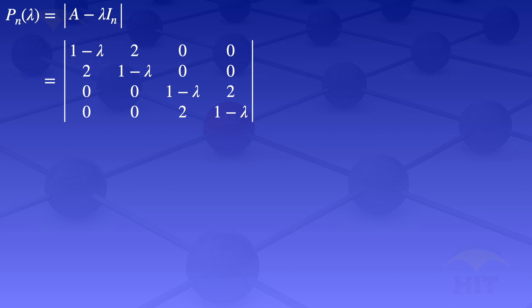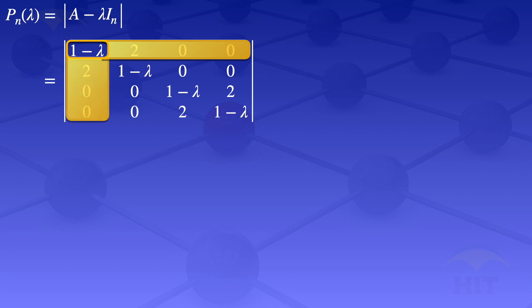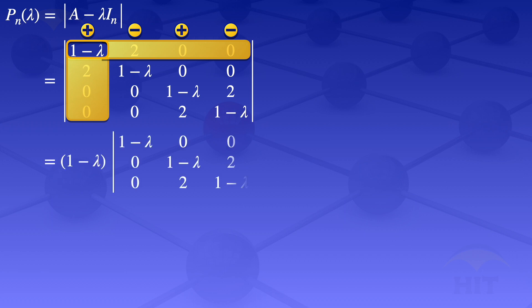Using row number 1 to evaluate the determinant, I'll look at the first element, 1 minus lambda. I close the row and the column containing this element. Using the array of positive, negative, positive, negative signs — the 1 minus lambda is sitting on a positive position. So it will be 1 minus lambda multiplied by the determinant of the uncovered elements: 1 minus lambda, 0, 0; 0, 1 minus lambda, 2; 2, 1 minus lambda.